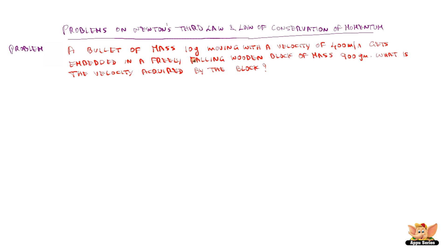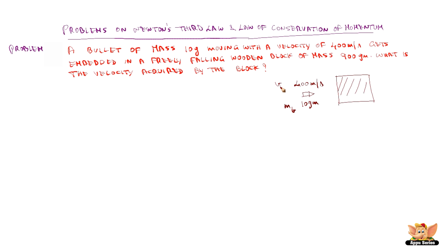In this case the bullet hits a wooden block and gets embedded within it, and we need to find the velocity acquired by the block. This is the wooden block and a bullet is coming — the bullet has mass mb of 10 grams and velocity vb of 400 meters per second. The wooden block has mass mw of 900 grams. This diagram represents the situation before the bullet collides — before collision.